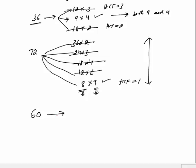It's not always necessary to break the number into exactly 2 co-prime numbers — we can have 3 or 4. For example, 60 is 10×6, 12×5, or 15×4. The co-prime pair would be 12×5 or 15×4. Since 10×6 is not co-prime (HCF is 2), for divisibility by 60 the number should be divisible by 12 and 5, or 15 and 4. Both are valid.